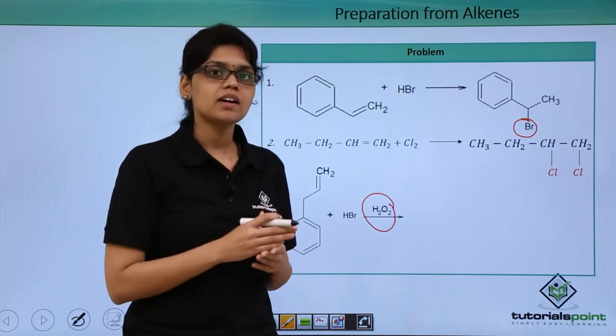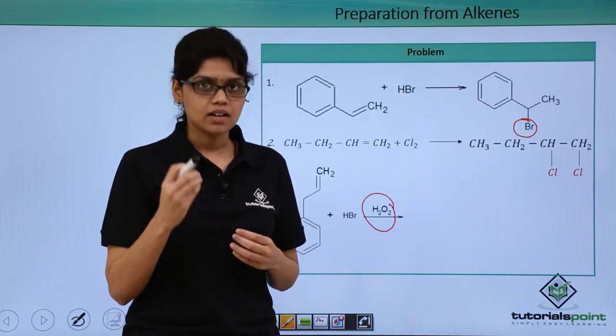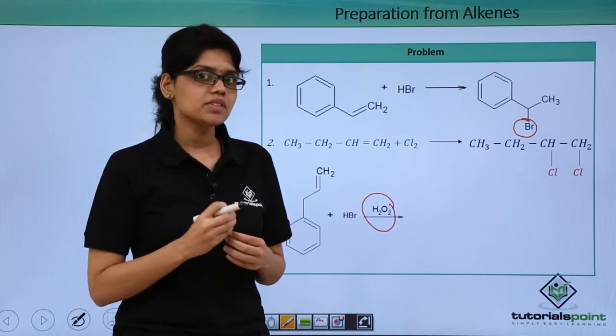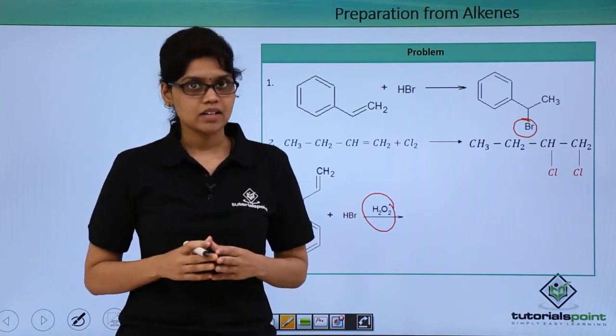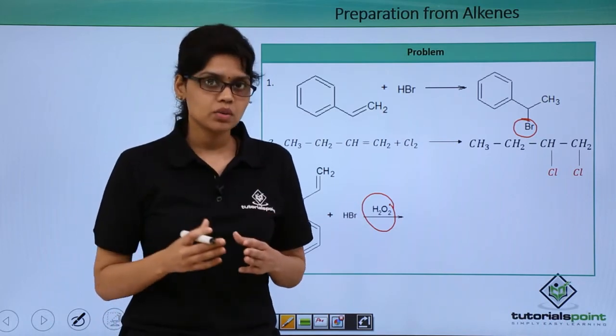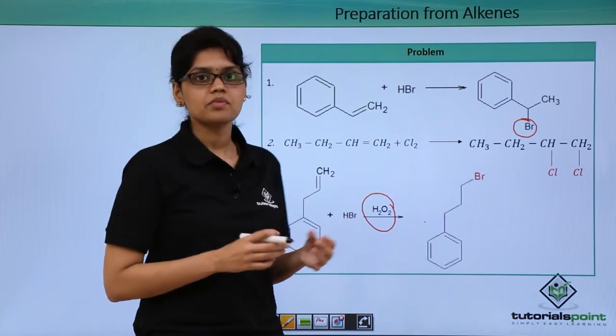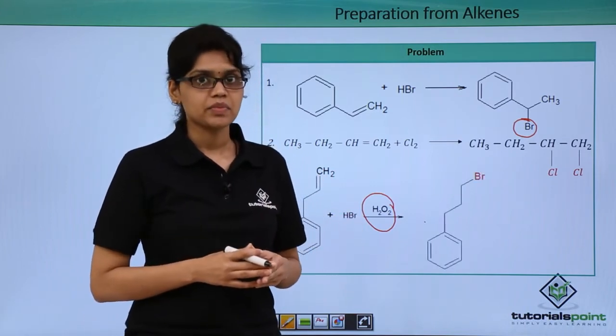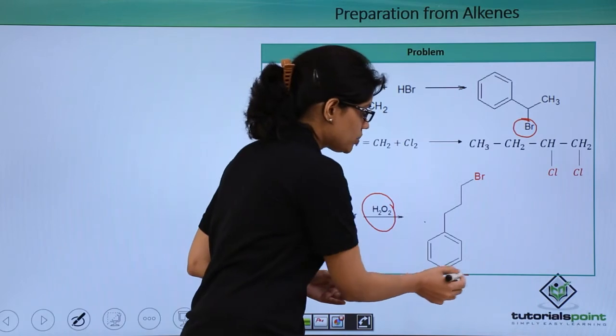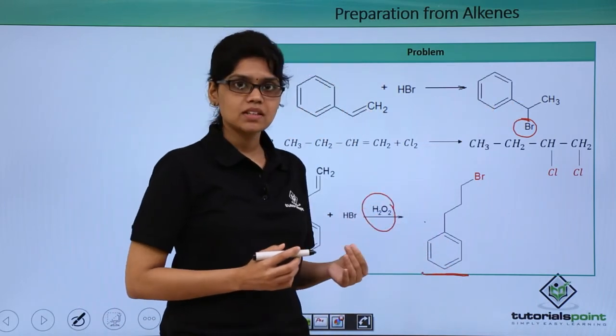We know that HBr when it reacts in the presence of peroxide gives peroxide effect or Kharash effect, and the mechanism of this reaction is a radical reaction. So the final product will be obtained according to anti-Markovnikov's rule such that bromine atom will be added to that particular carbon atom which has more number of hydrogen atoms. Therefore, the final product obtained would look something like this, which is different from the product that we have seen in the first reaction.